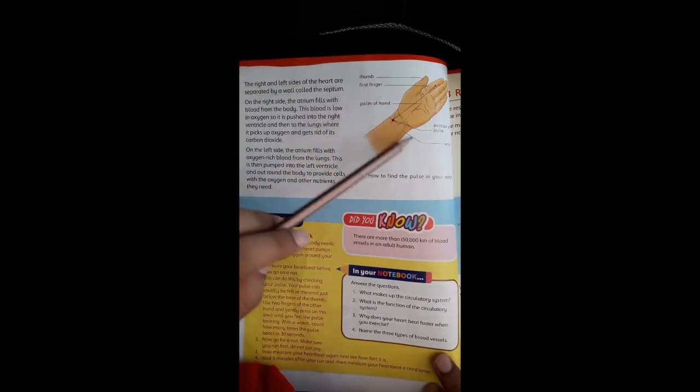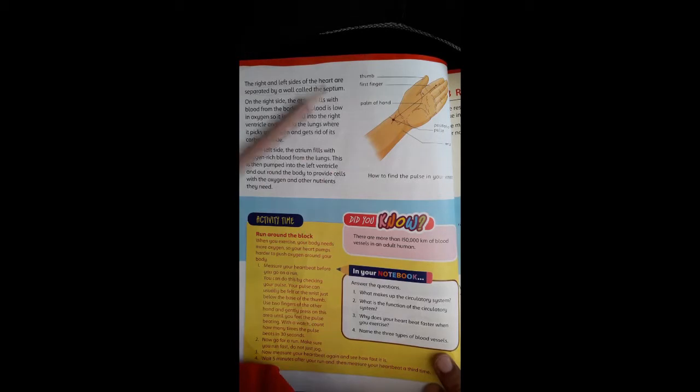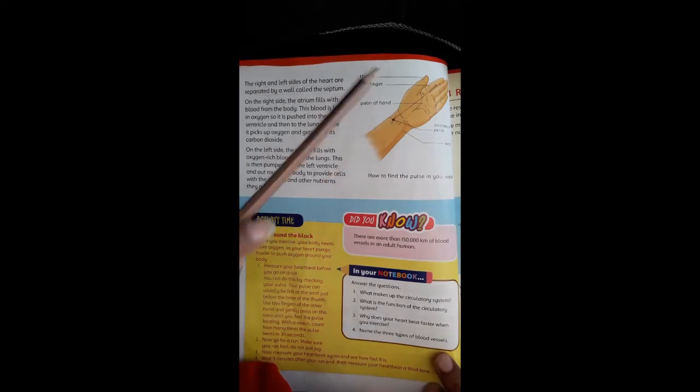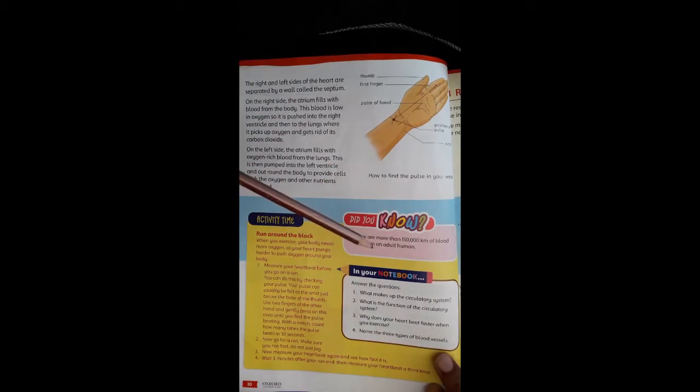Now here you can see a palm. Here you can see a thumb, there is thumb and finger. How to find the pulse in your wrist. Here you can check the pulse in your wrist.